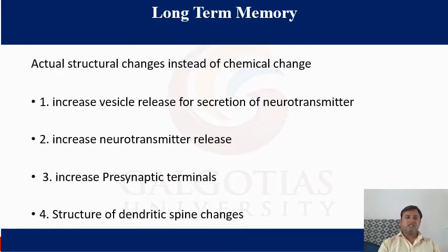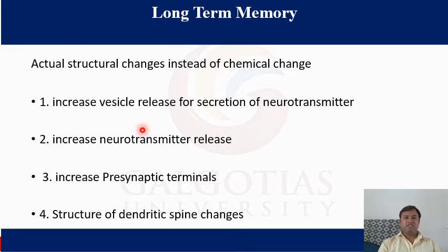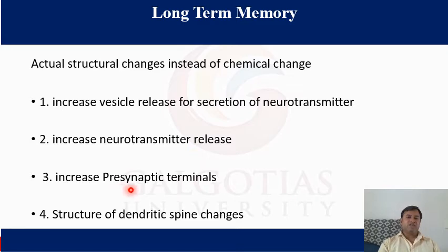This is the process of intermediate memory. Next is long-term memory. In long-term memory, actual structural changes occur rather than just chemical changes. These include increased vesicle release, a larger number of neurotransmitter releases, increased presynaptic terminals, and changes in the structure of dendritic spines.